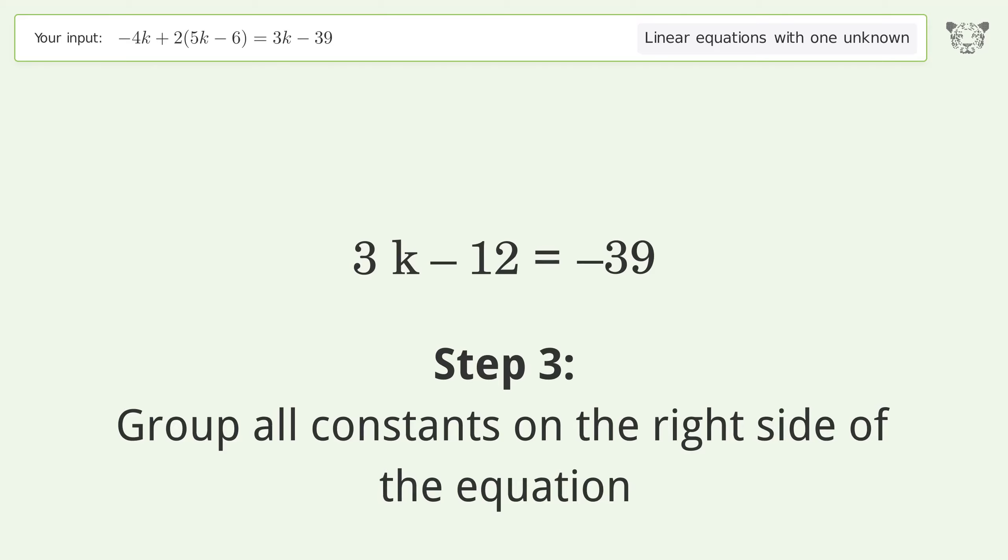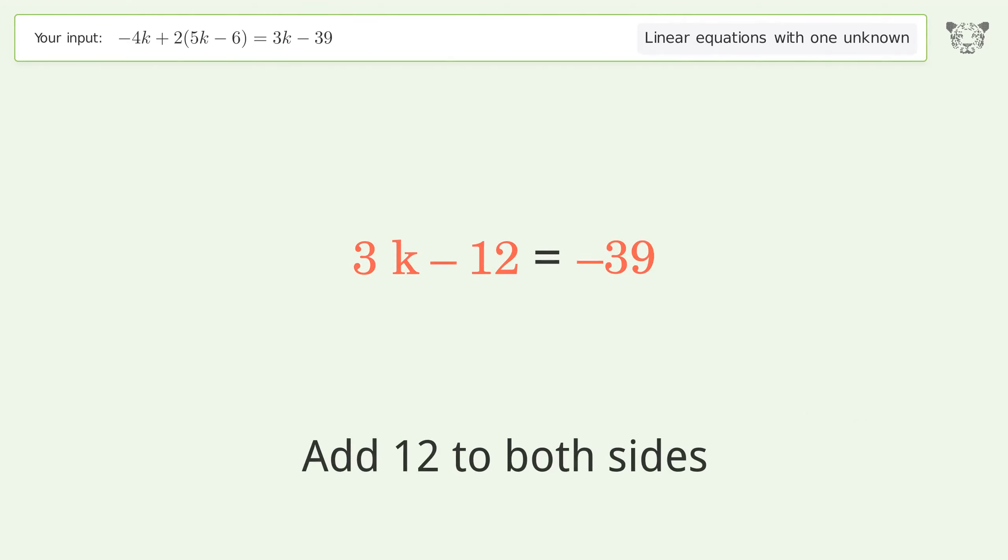Group all constants on the right side of the equation. Add 12 to both sides. Simplify the arithmetic.